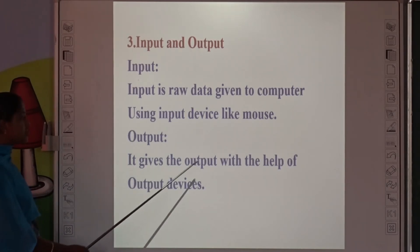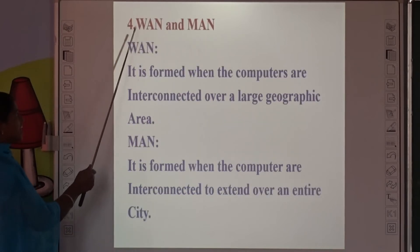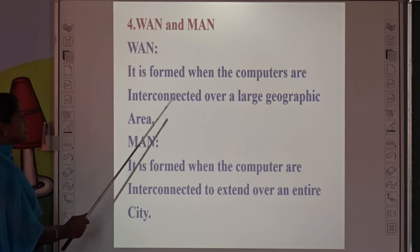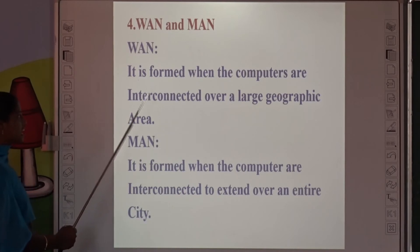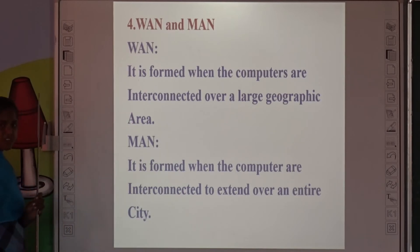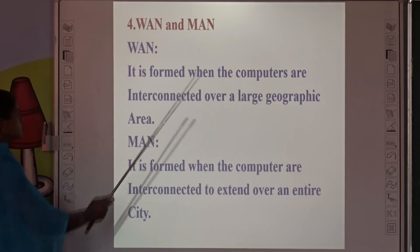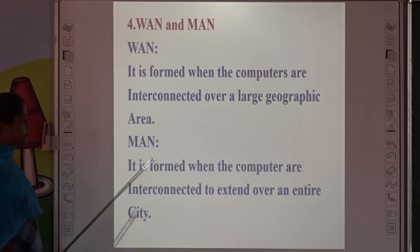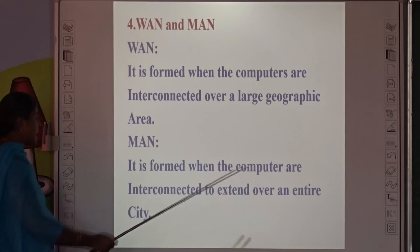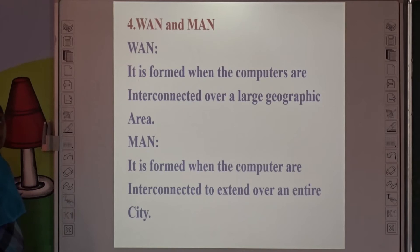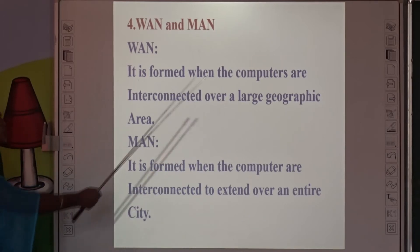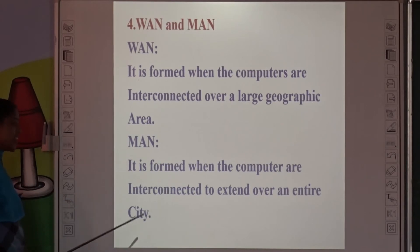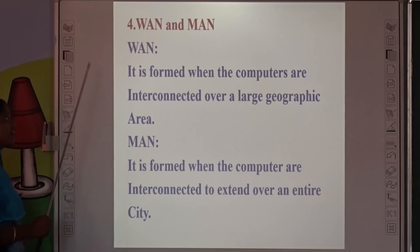WAN: computers are interconnected over a large geographic area. WAN stands for Wide Area Network. MAN is Metropolitan Area Network — computers are connected to extend over an entire city. For example, if I want to connect to another area within a city, I can use MAN. WAN covers a large geographic area, while MAN connects an entire city.